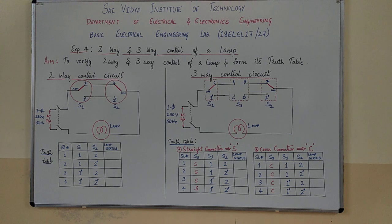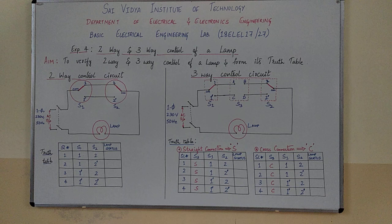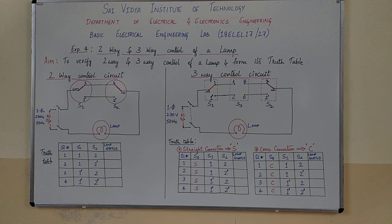In today's session, the aim of the experiment is to verify two-way and three-way control of a lamp and also form its truth table. Two-way switching connection is used to control electrical appliances from two different places by using two-way switches.